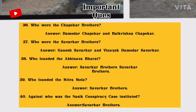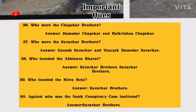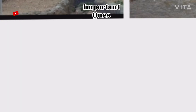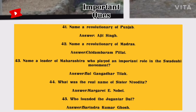Number 39: Who founded the Mitra Mela? Answer: Savarkar brothers. Number 40: Against whom was the Nasik Conspiracy Case instituted? Answer: Savarkar brothers. Number 41: Name a revolutionary of Punjab. Answer: Ajit Singh. Number 42: Name a revolutionary of Madras. Answer: Chidambaram Pillai.